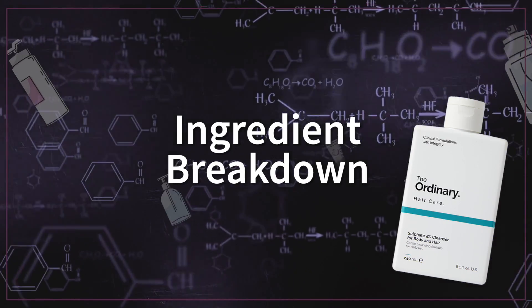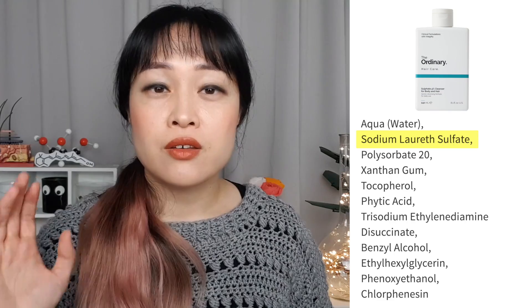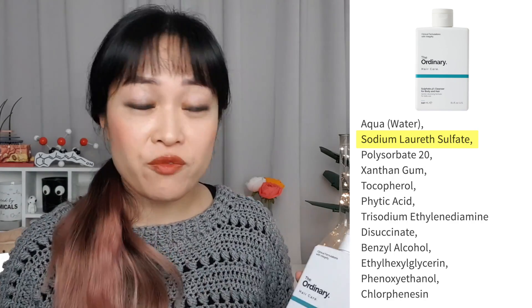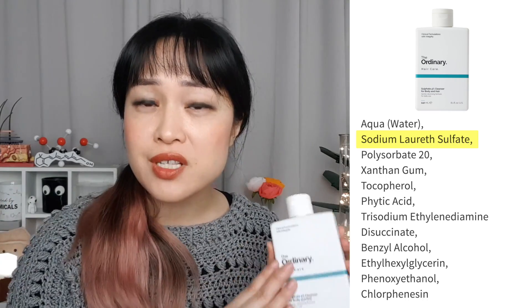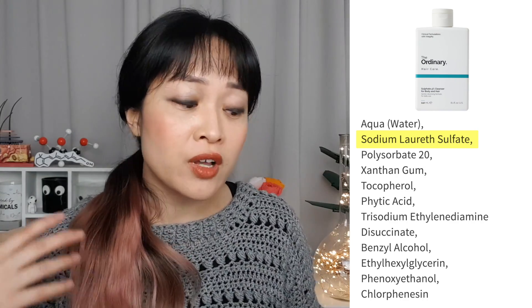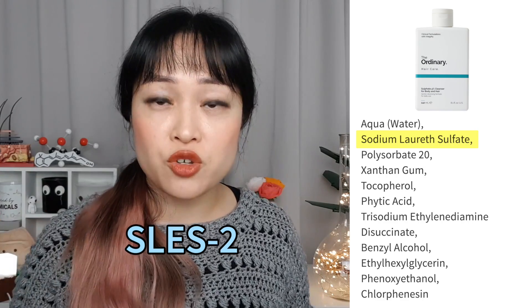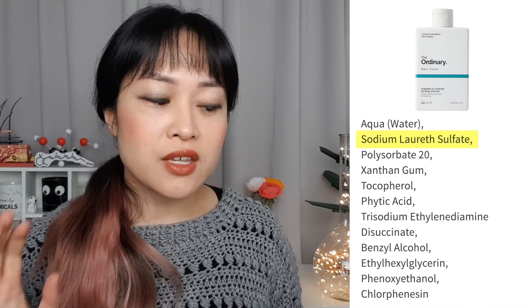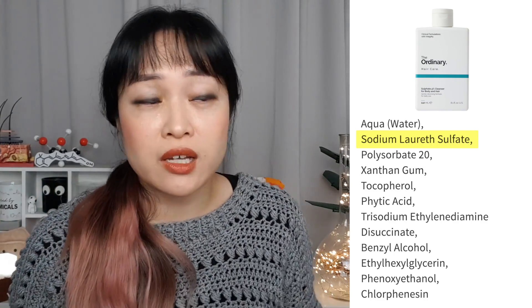Let's look at The Ordinary's sulfate 4% cleanser for body and hair — a pretty stripped-back formula. Sodium laureth sulfate is the anionic surfactant at 4%, which is low for a shampoo, but this doubles as a body wash which normally has lower amounts, keeping it gentle. Specifically they're using SLES-2, meaning two ethoxy units per molecule — the most common type used in shampoos because it gives a good balance between cleaning, gentleness, and cost.